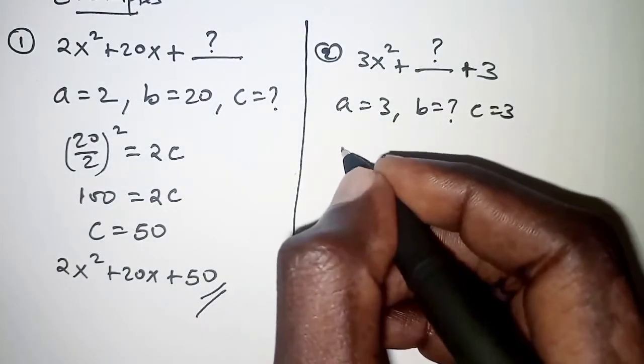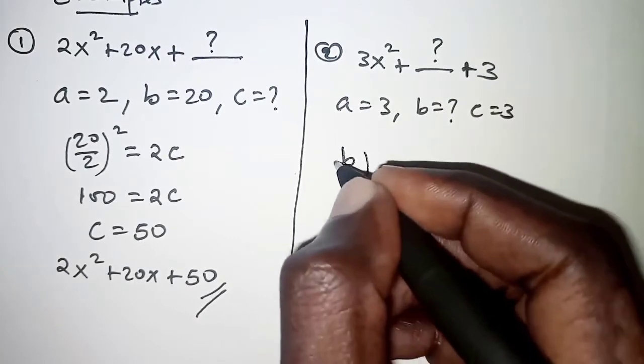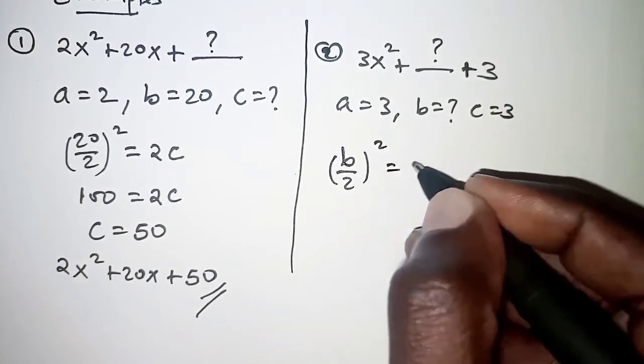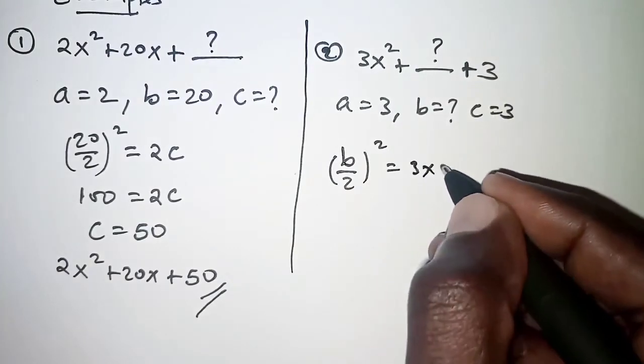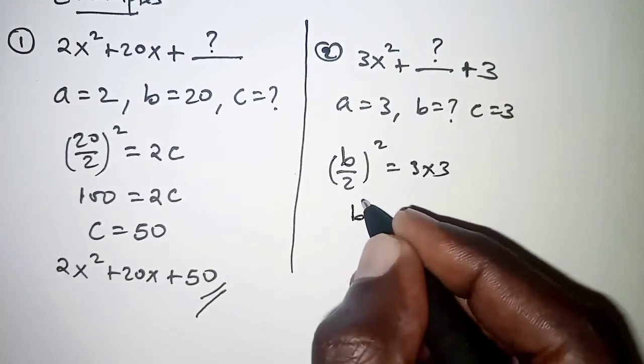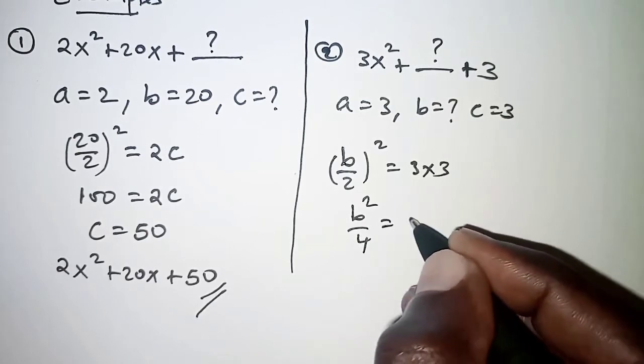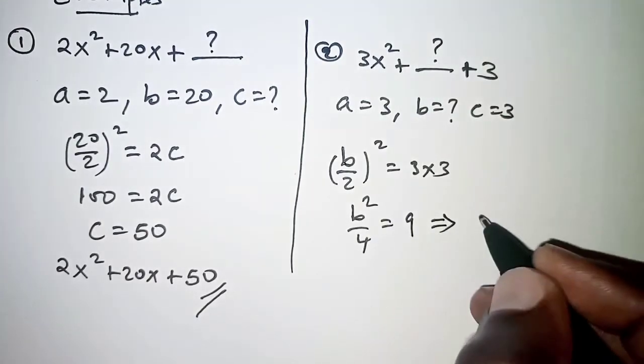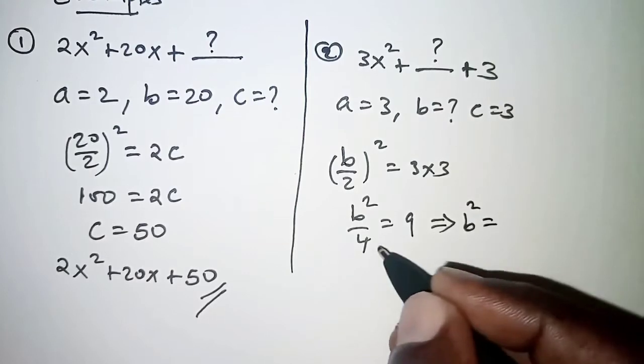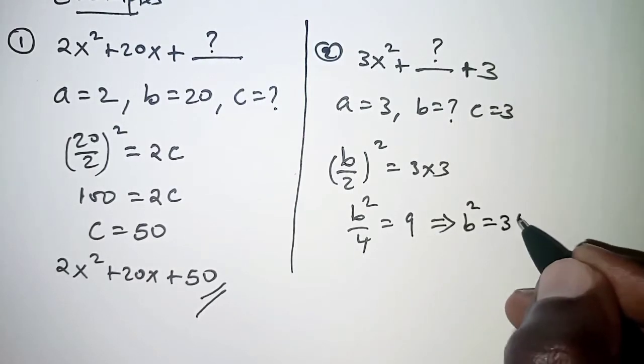So we have (b/2)² = a × c, that is 3 × 3. Here we'll have b²/4 = 9, which implies that b² = 4 × 9, that is 36.